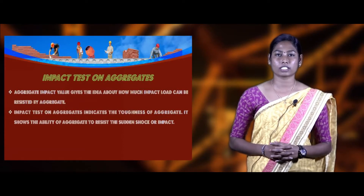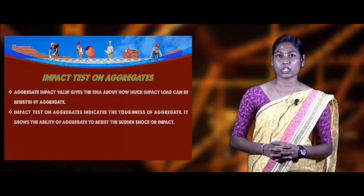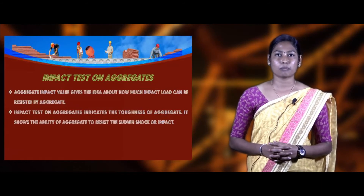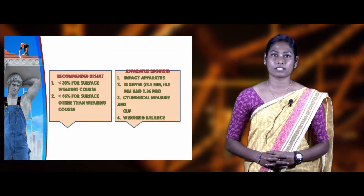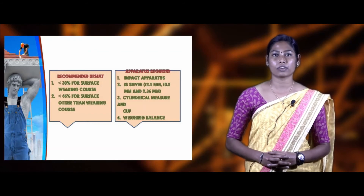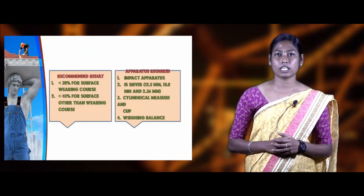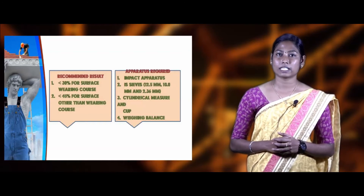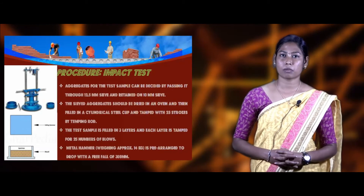The aggregate impact test gives an idea about how much the aggregate resists impact load. Aggregates should be sufficiently tough to resist disintegration due to impact load — this property is called aggregate impact value. The recommendation: aggregate impact value should not be more than 30% for aggregate used in surface bearing courses, and not more than 45% for surfaces other than bearing courses. Apparatus used: impact testing machine, sieves of 12.5 mm, 10 mm, and 2.36 mm, a cylindrical cup, and a weighing balance.